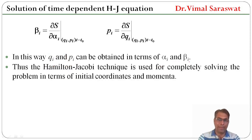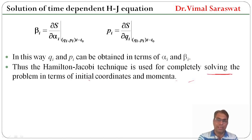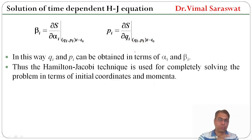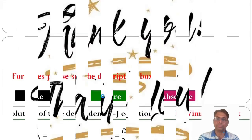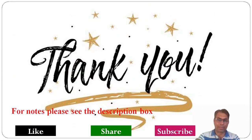Thus the Hamilton-Jacobi technique is used for completely solving the problem in terms of initial coordinates and momenta, because q_i and p_i at t equals T0 represent the initial coordinate and initial momenta. Here we end our session. In today's session of classical mechanics, we have solved the Hamilton-Jacobi equation. Goodbye.